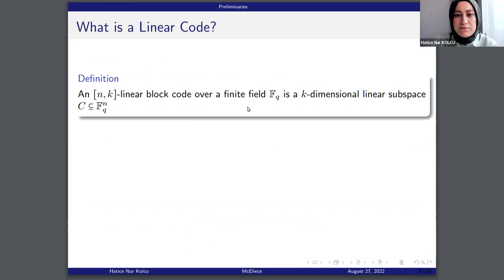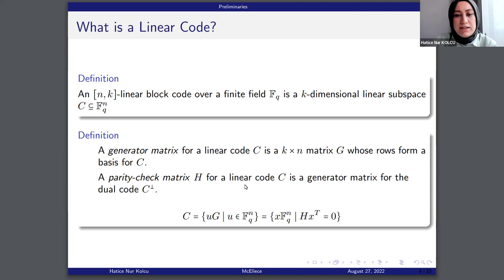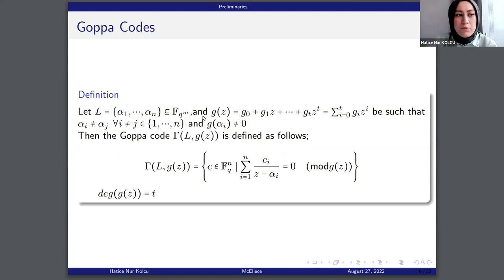What is a linear code? A linear block code over a finite field is a K-dimensional subspace of F_Q to the N. A generator matrix for a linear code is a K times N matrix whose rows form a basis for C. A parity check matrix for a linear code is a generator matrix for the dual code. A linear code can be constructed by a generator matrix and a parity check matrix.